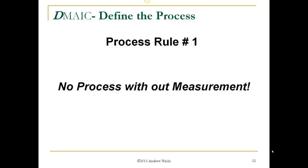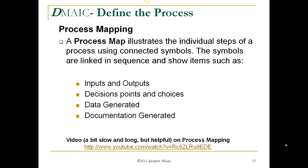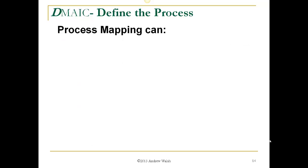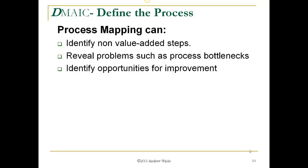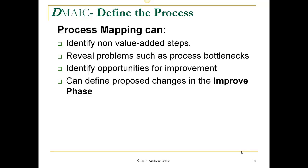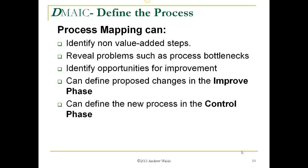Process rule number one: no process without measurement. Process mapping illustrates the individual steps of a process using various connected symbols linked in sequence, showing inputs and outputs, decision points, data generated, and documentation generated. Process mapping can identify non-value-added steps, reveal bottlenecks, identify opportunities for improvement in the improve phase, and define the new process in the control phase.